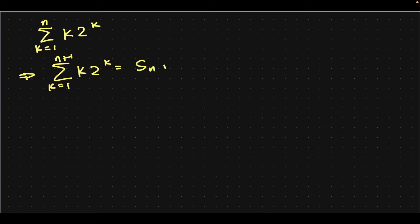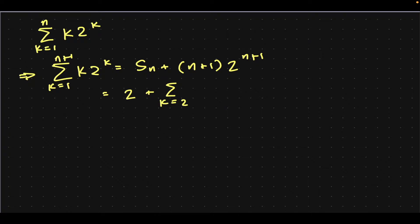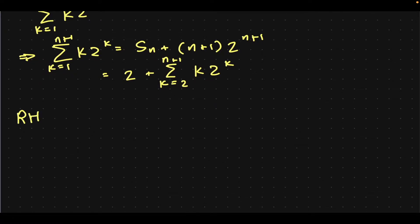You can write this as Sn added with the n plus first term, which is n plus 1 times 2 to the n plus 1. And you can also write the first term out, which will be a 2 plus sum from k equals 2, because we wrote the first term out, to n plus 1 of k times 2 to the k. Now, just consider the right-hand side, because that's the first thing that looks promising.